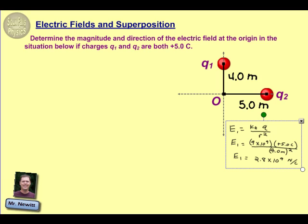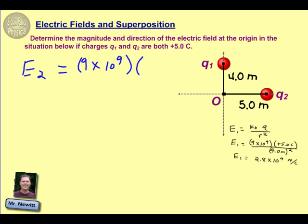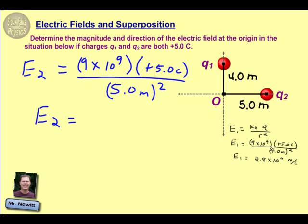Now we need to perform the same calculation for our second charge Q2. The electric field for charge 2 is again our constant kE, 9 times 10 to the 9th. The charge is still a positive 5 Coulomb charge; the only thing that's different now is our distance is 5 meters. So 5 meters squared, and when we calculate that electric field, we end up with 1.8 times 10 to the 9th Newtons per Coulomb.